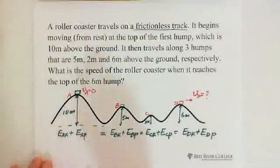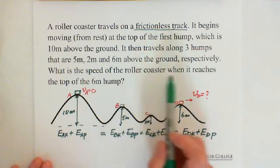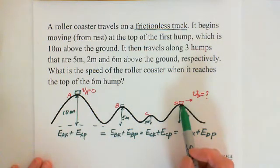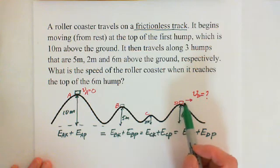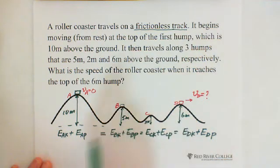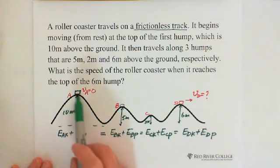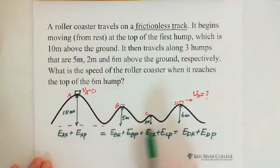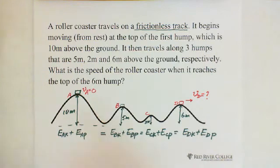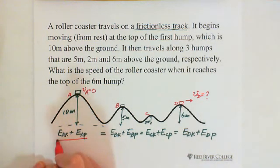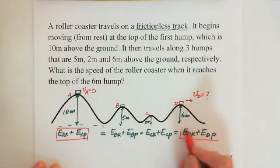So the question is looking for the speed when it reaches the 6 meter high hump. Because at point A, the total mechanical energy equals point B equals C equals D, that's why we can just pick up the first and the last, right? Because they are all equal.